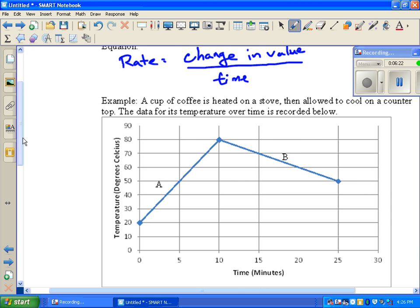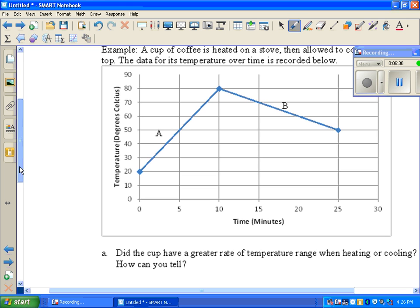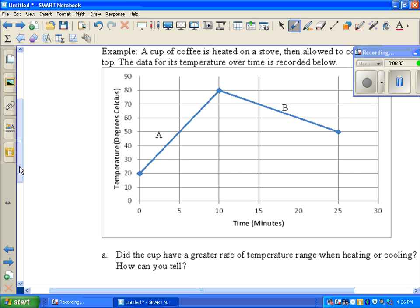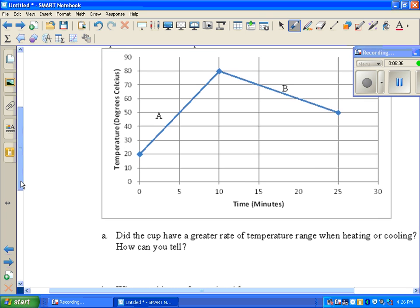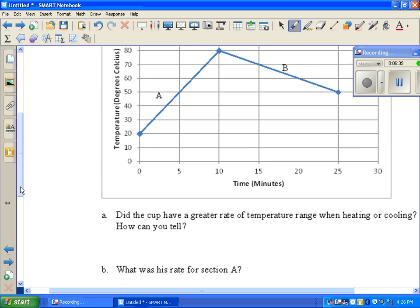So here's an example. A cup of coffee is heated on the stove and allowed to cool on a countertop. The data for the temperature recorded below. So part A is when it was on the stove and it got hotter, and then part B is after it was allowed to cool off. Now, did it have a greater rate when it was heated or cooling? Well, remember, you can tell how fast it was going by the steepness. It's steeper for A, so it had a greater rate when heating. I can tell because it was steeper.